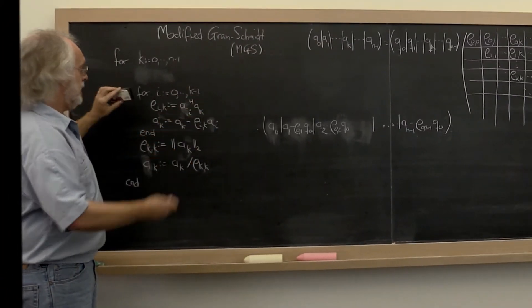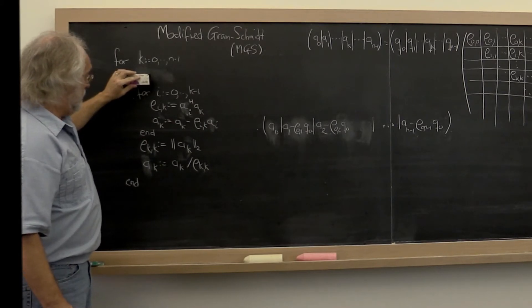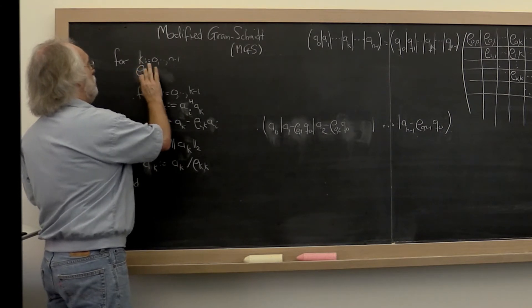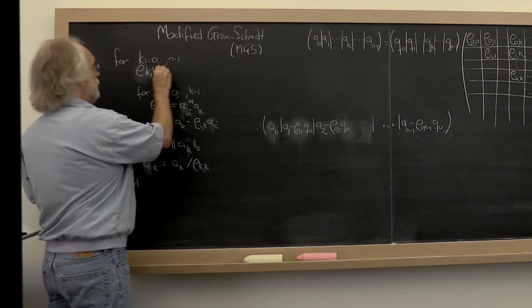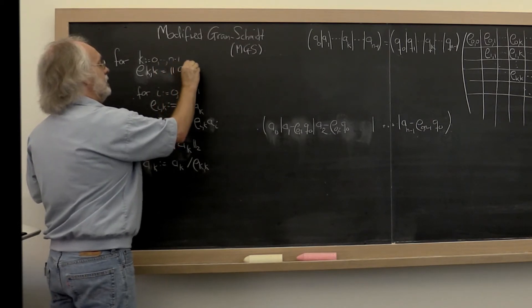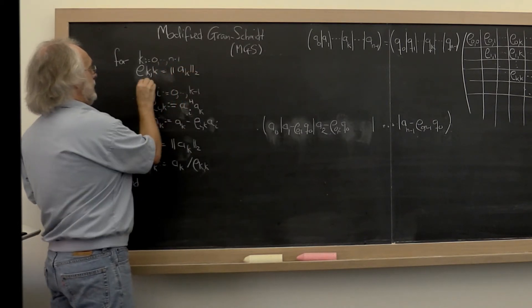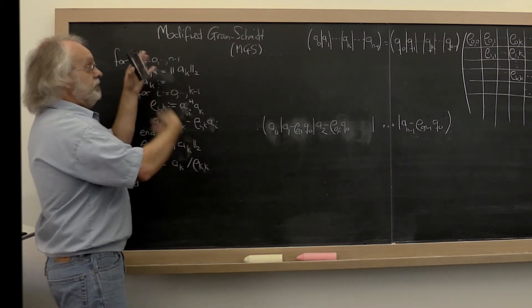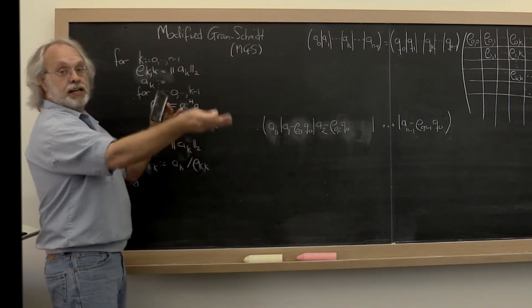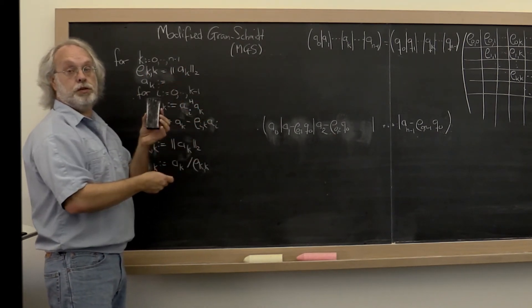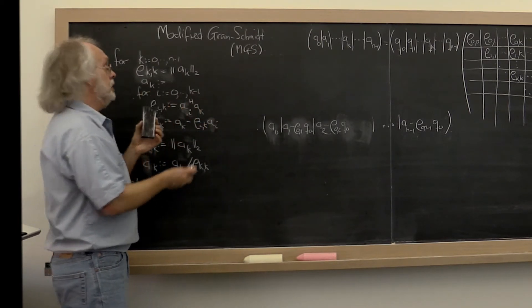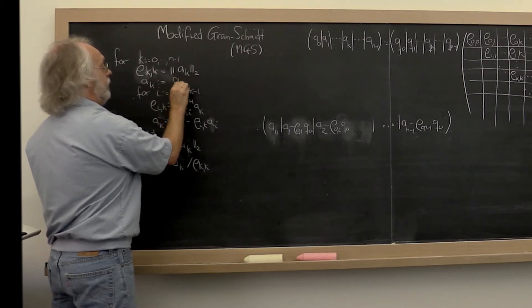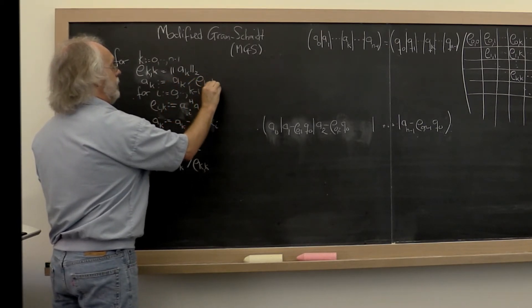The algorithm that implements that idea goes as follows. It starts at the top computing the length of AK. It then overwrites AK with Q. Now it can do that because previous iterations have already subtracted out all of the components in the directions of the previous Qs that had overwritten the previous columns of A. So we can just go directly to scaling it.